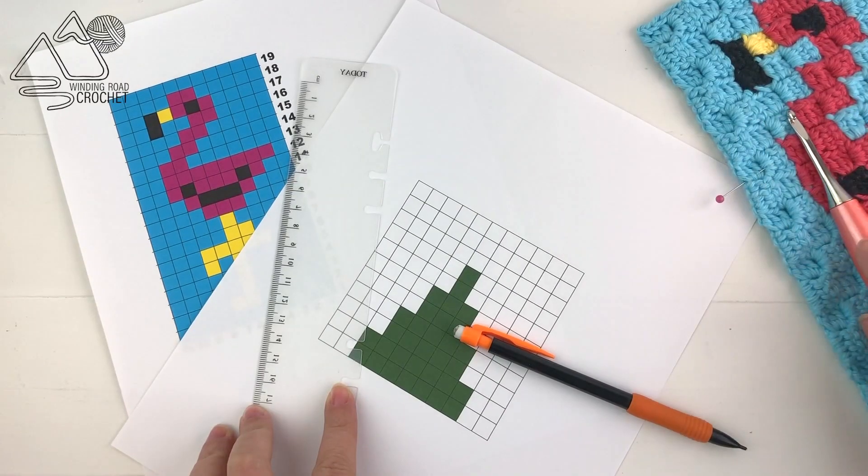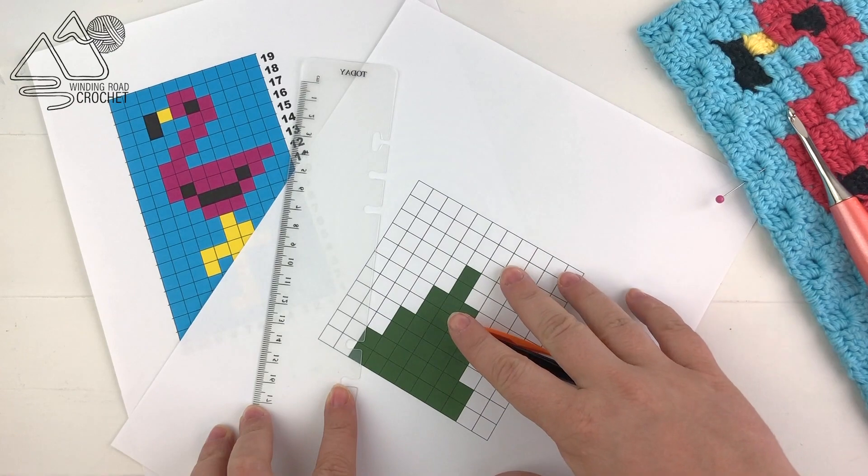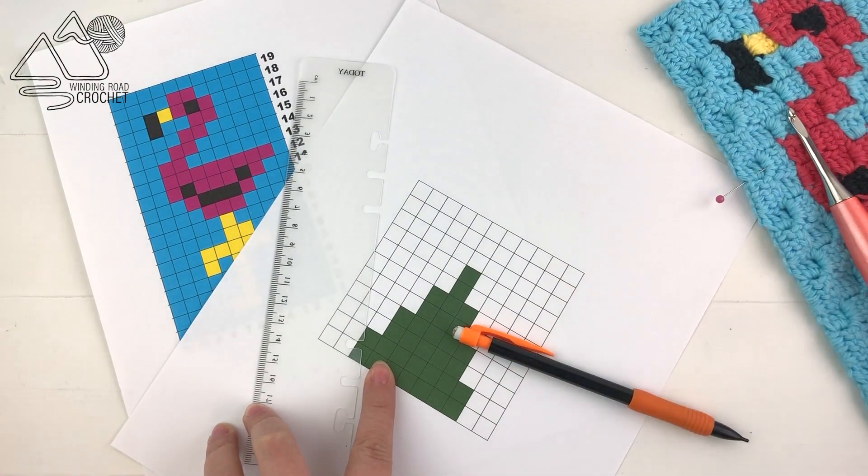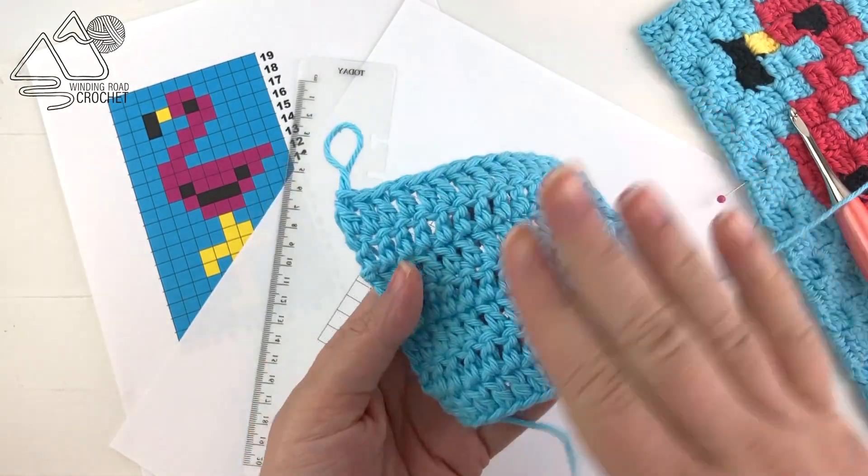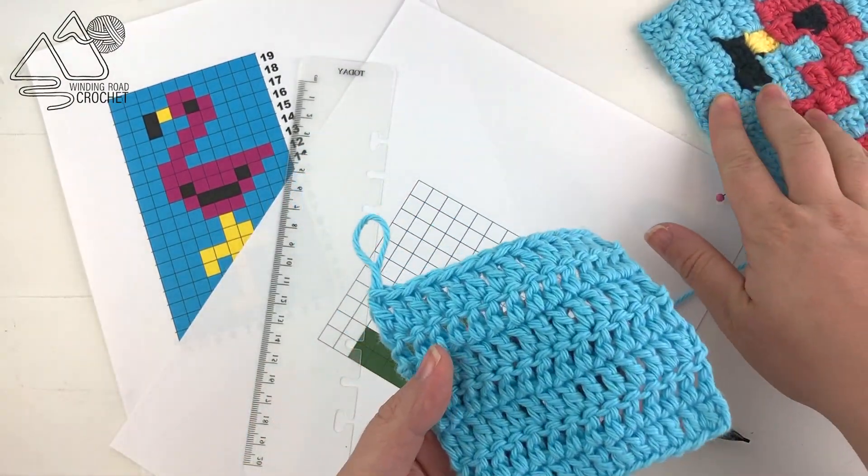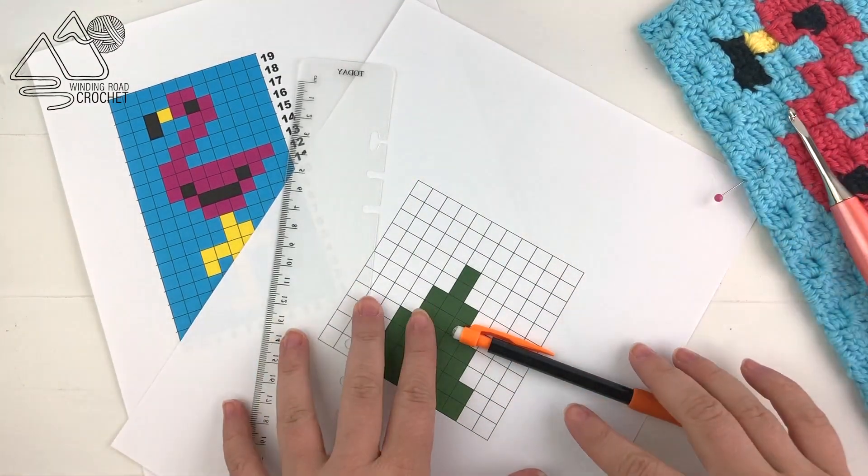Let's go ahead and take a look at our graph. Now you can get this exact same flamingo graph on my blog post for this tutorial, and you can download it. There's a link in the description box below for that. Now we've already figured out our gauge for this pattern. We've printed out our graph. You're going to need a ruler and a pencil in order to make some adjustments.